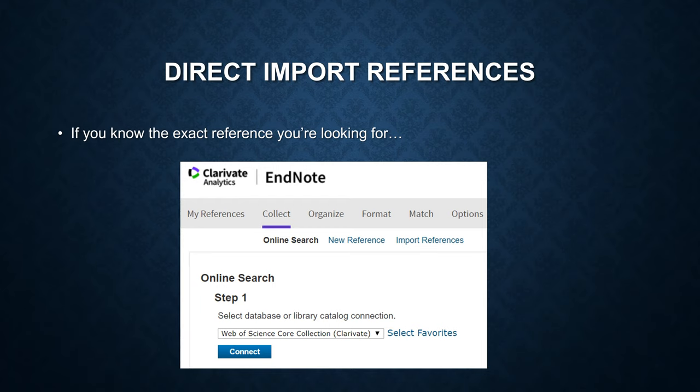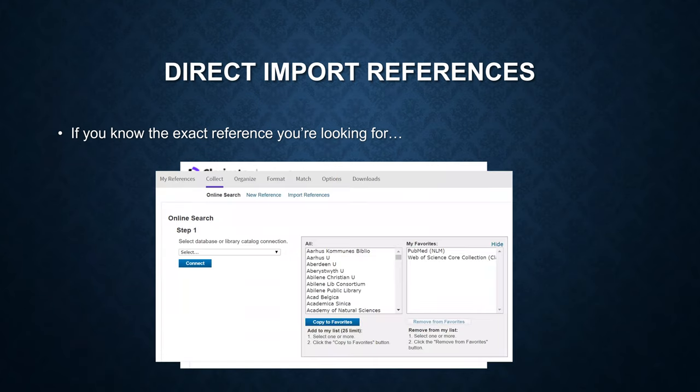Then pull down the menu to look into a specific database. If you cannot find the specific database you are looking for, click on Select Favorites. On the left side, you can choose any of the databases, and you can also copy them to the favorites.